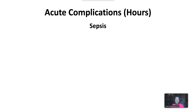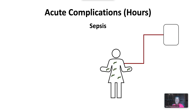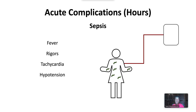Sepsis occurs from contaminated blood products transfused to recipients. The risk of bacterial infection is highest with platelets, which are stored at room temperature. Symptoms of infection occur within hours of blood transfusion and include fever and chills, rigors, tachycardia, and hypotension.